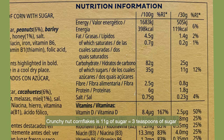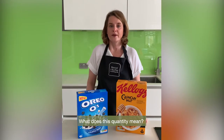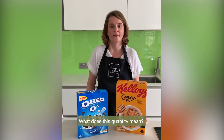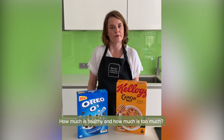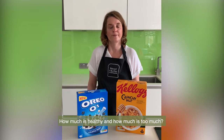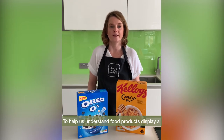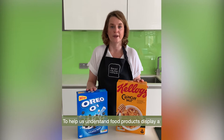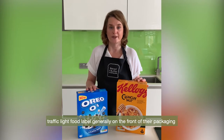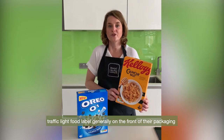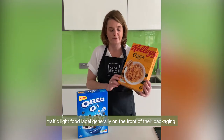For the Crunchy Nark Corn Flakes packet of cereals, you can see that the amount of sugar in one bowl is 11 grams, which is equivalent to 3 teaspoons of sugar. Now this is all well and good but what does this quantity actually mean? How much is healthy and how much is too much? To help us understand this, food packaging will include a food label situated on the front of the packaging, and this is called a traffic light food label.